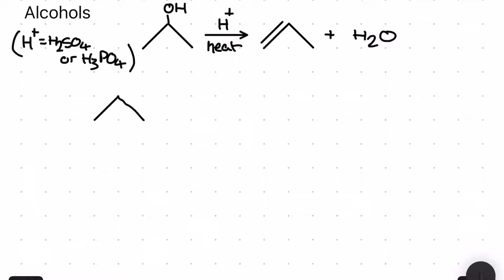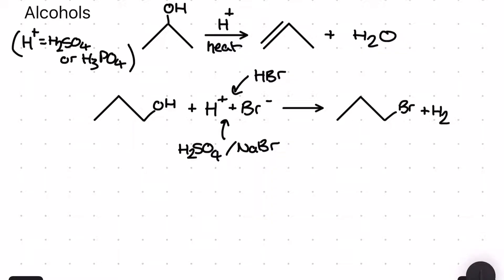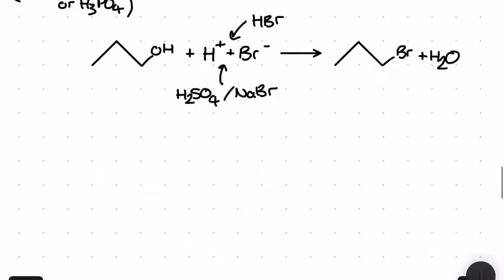For the next reaction we're going to use H₂SO₄ and a sodium halide salt to provide HBr in situ — meaning the H₂SO₄ and NaBr react in the mixture to produce HBr, represented as H⁺ and Br⁻ — to react with an alcohol to produce a haloalkane and some water.